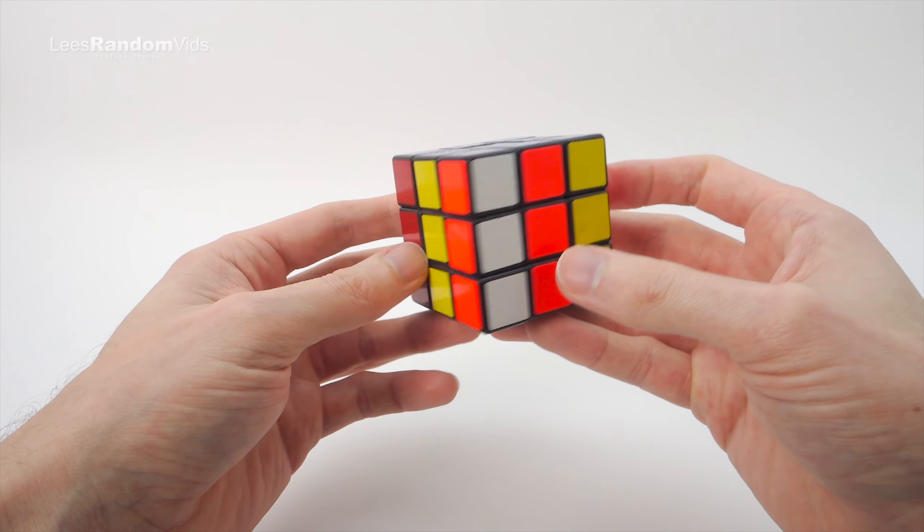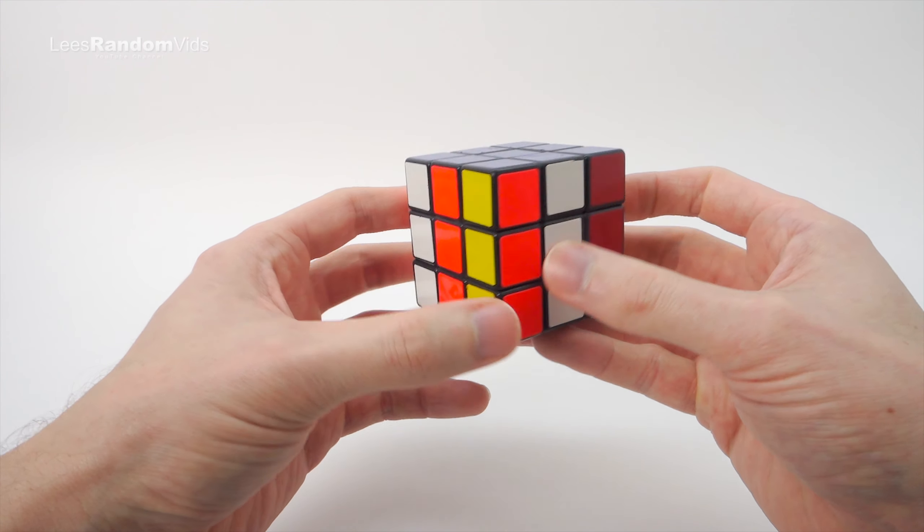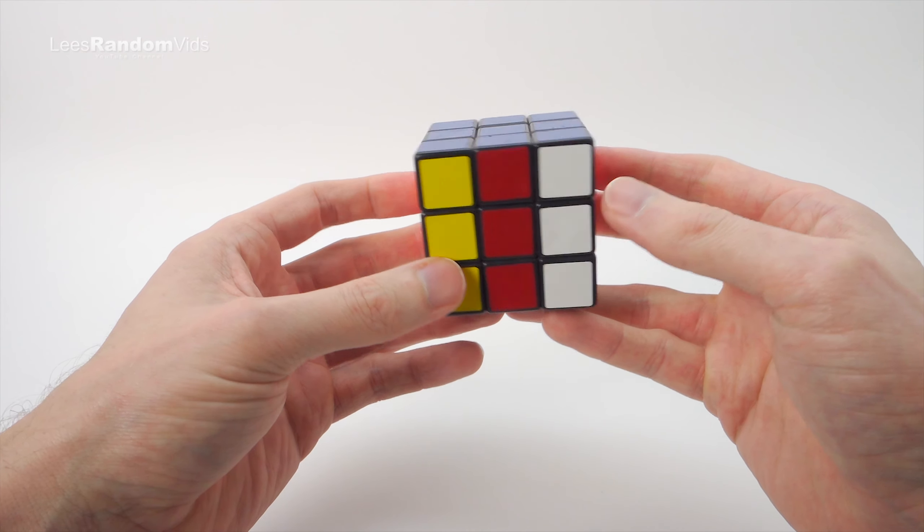In this video I'm going to show you how to do this pattern where you put vertical stripes on all the side faces on a 3x3 Rubik's Cube.